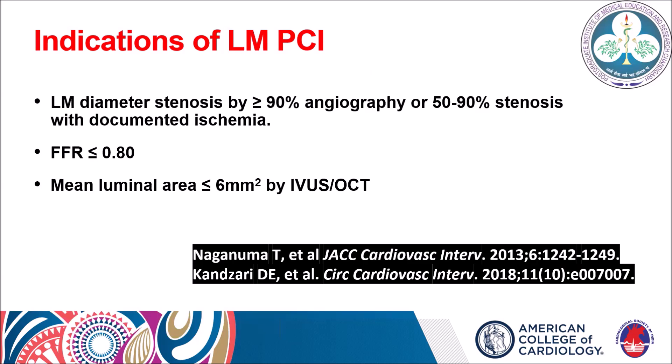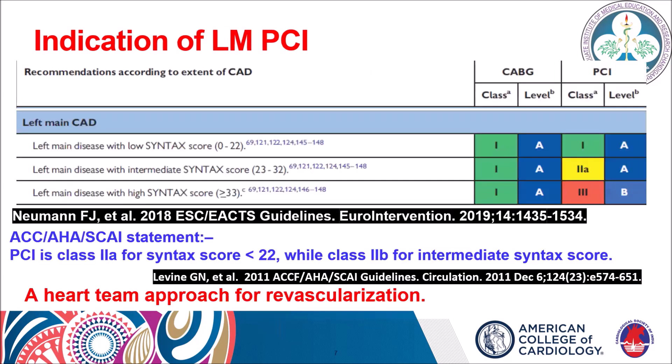What are the indications for left main PCI? Any stenosis more than 90% on angiography, or between 50–90% with documented ischemia, should be subjected for revascularization. An FFR value of less than 0.8 or minimum luminal area less than 6 mm² on intravascular imaging including IVUS indicates need for revascularization. Per ESC guidelines, there is a Class 1A recommendation for left main PCI when the SYNTAX score is less than 22, while a score above 22 carries a Class 2 indication.